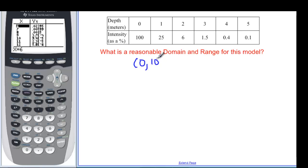0 to 10 meters for the domain. And for my range, that means we went from 100. And we got pretty close to 0. Since I have a parenthesis on here, it means I get close to 0, but never get there.